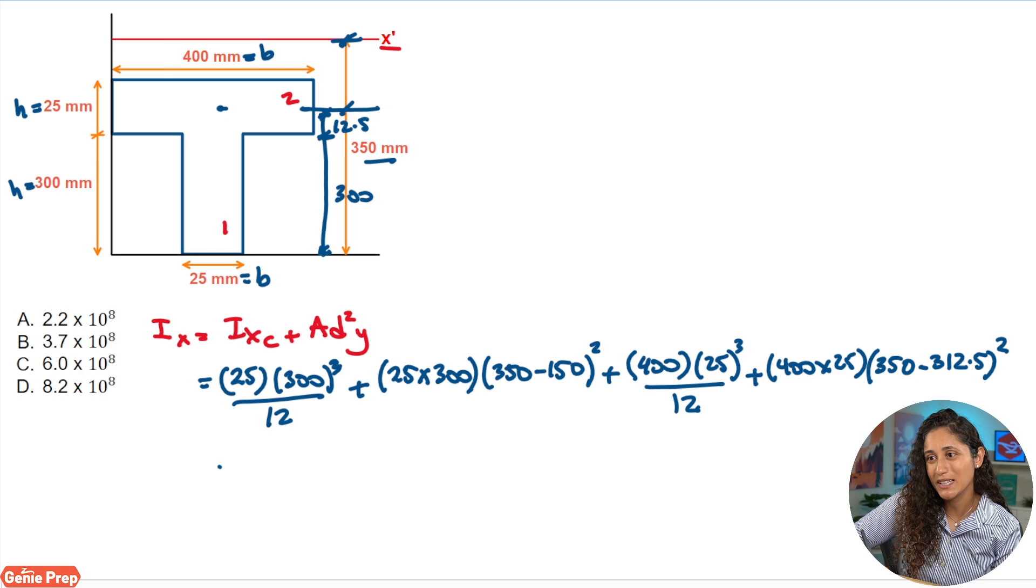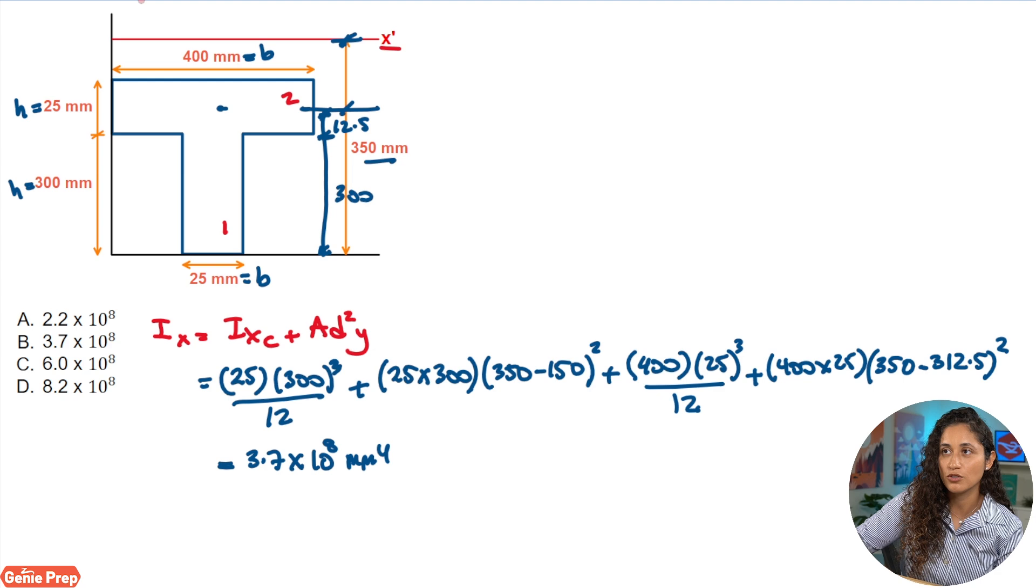Now if you guys plug in these numbers in your calculator, you're going to get 3.7 times 10 to the power of 8. And this is going to have the unit of millimeters to the power of 4. So if we take a look at the multiple choice, the answer is going to be B.